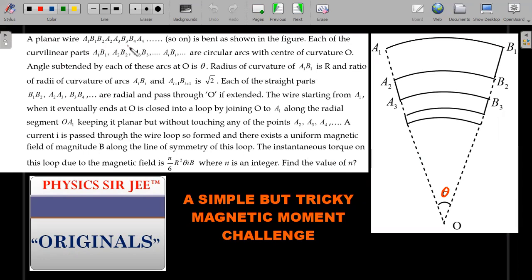Here we go ahead with the formal reading of the question. A planar wire A₁B₁, B₁B₂, A₂A₃, B₃B₄, A₄ and so on, consists of circular arcs. The dotted lines are not part of the wire—the wire goes like this and keeps going up till an infinite number of turns.